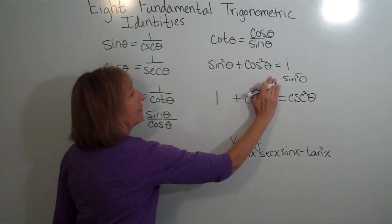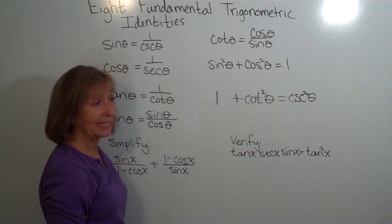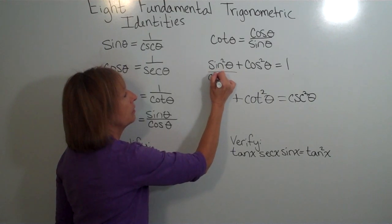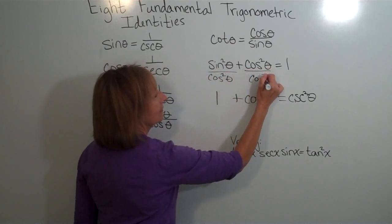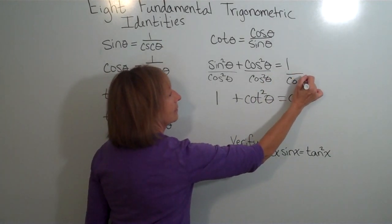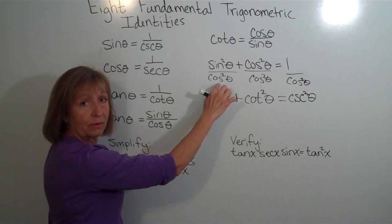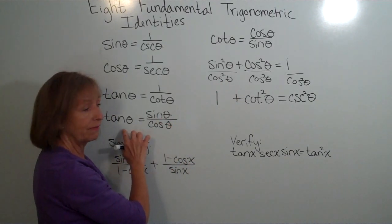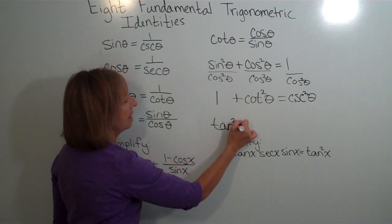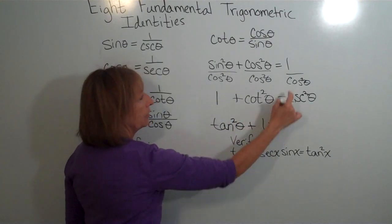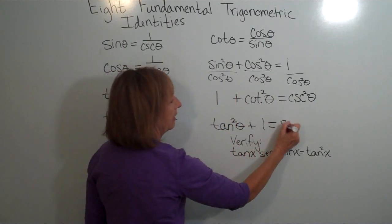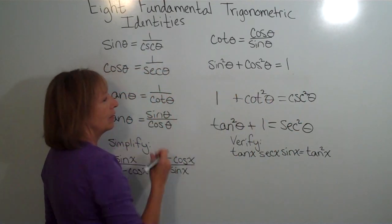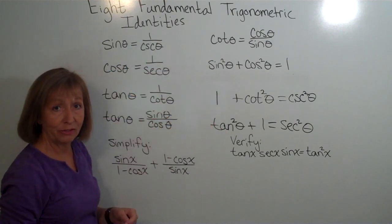The eighth of the eight fundamental trig identities comes from dividing sine squared theta plus cosine squared theta equals 1 through by cosine squared theta. Sine squared theta divided by cosine squared theta gives tangent squared theta, so I get tangent squared theta plus 1 equals secant squared theta. That gives us all eight fundamental trig identities.